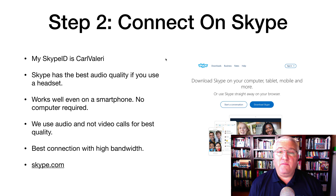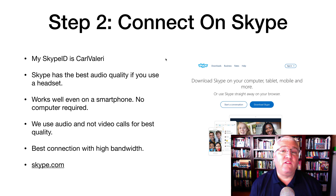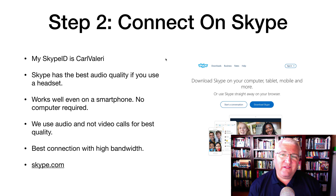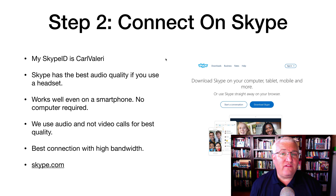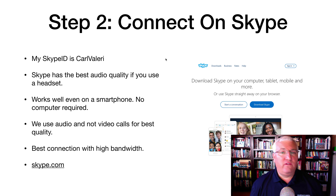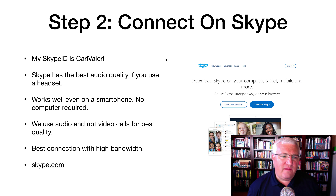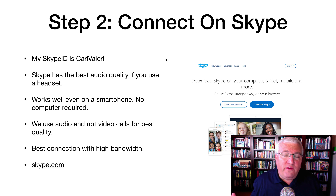The second step is to connect with me on Skype. If you don't have Skype, you can go to Skype.com — there are simple directions on how to set it up, and we'll have links to that underneath this video. My Skype ID is Carl Valeri. Skype has the best audio quality, especially if you use a headset. I highly recommend a USB headset — it's usually the easiest to configure and not that expensive; you can find them on Amazon. Skype also works well with a smartphone or iPad, so there's no computer required.